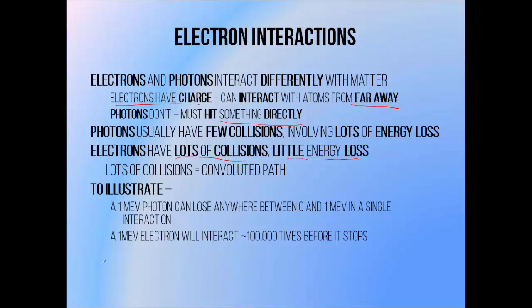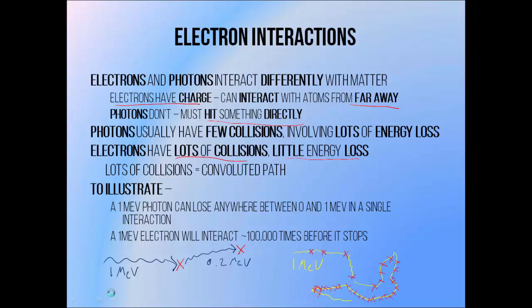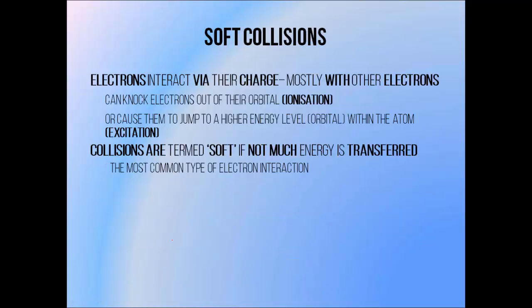To illustrate the difference between the two, a photon with an energy of 1 mega electron volt can lose anywhere between none of and all of its energy in a single interaction. On the other hand, an electron with the same energy will interact around 100,000 times before it loses all of its energy.